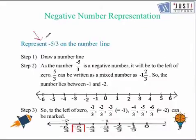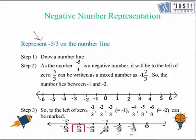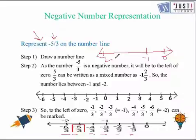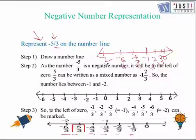Now we learn how to represent negative rational numbers on the number line. We use the same method as for positive numbers, but the number goes on the left-hand side with a negative sign. For example, to represent minus five over three — since it is greater than one in magnitude, it lies between minus one and minus two. Dividing that section into three equal parts gives minus one over three, minus two over three, minus three over three (which is minus one), minus four over three, minus five over three, and minus six over three (which is minus two). So minus five over three is marked at the fifth division from zero.